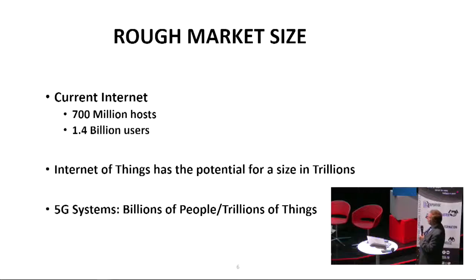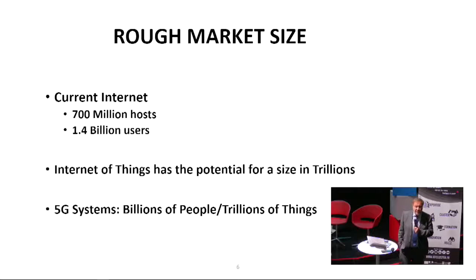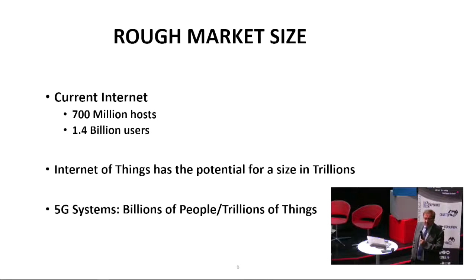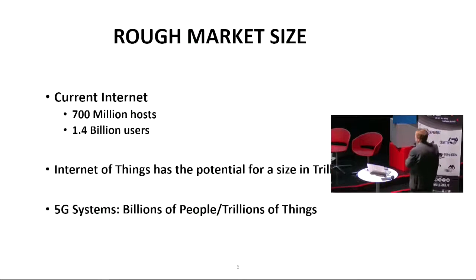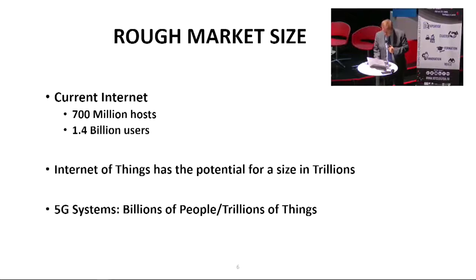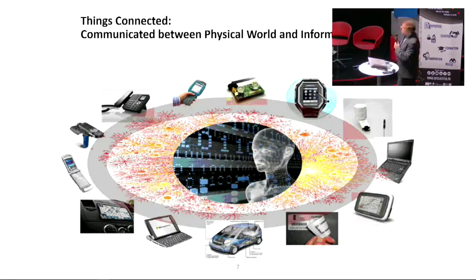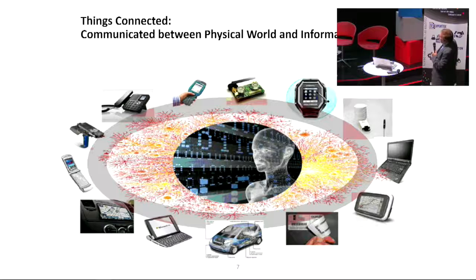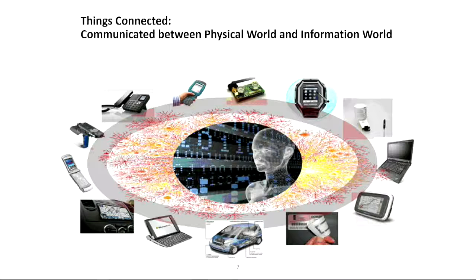The current Internet has 700 million hosts and 1.4 billion users, and now we are talking about how to have trillions of things connected. In 5G cellular systems, planned between 2020 and 2030, IoT will be a major component — billions of people and trillions of things supported by 5G, creating an enormous network. Scale-width is the biggest problem, along with security.